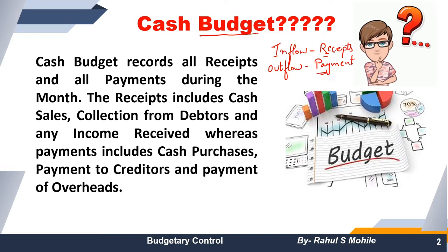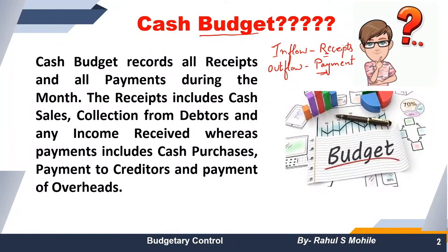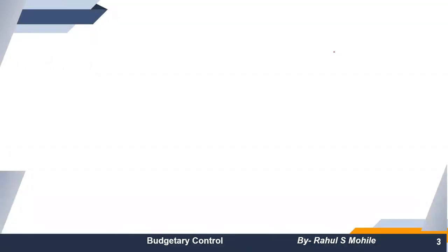यह थोड़ा calculated और technical part है, लेकिन ध्यान से, systematically, धीरे धीरे पढ़ेंगे ताकि cash budget के सारे levels clear हो जाएं. Usually paper में cash budget और flexible budget इन दोनों पर ही questions पूछे जाते हैं. That is the simple meaning of cash budget — whatever inflow of cash we receive is recorded in receipts, and whatever payments we make is recorded in the outflow part. थोड़े examples से समझाता हूँ कि किस तरीके के points आएंगे.